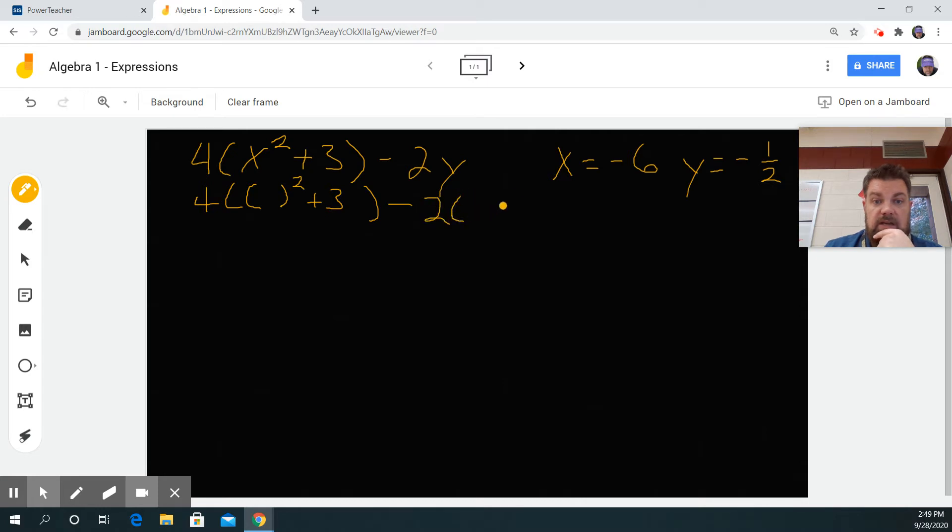So 2 times this—I'm going to plug in a negative 6 for X, and then I'm going to plug in a negative 1/2 for Y. And then from here, it's just an order of operations problem, so what I need to do is do the work on the inside first.